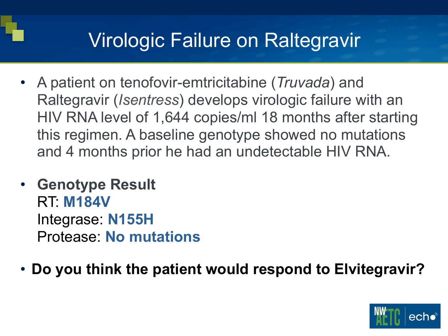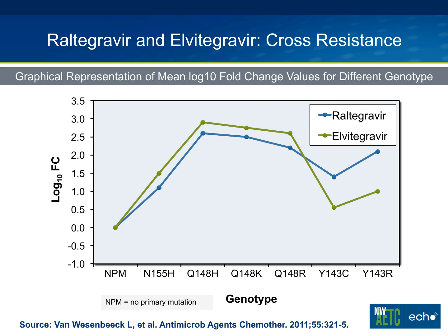Going back to this scenario: the individual had M184V and the most common raltegravir resistance mutation, N155H. The question now is, could we use elvitegravir, which is part of the new STRIBILD? The answer is very clear: no. Looking at this graphic of genotype mutations — no primary mutations (NPM), the N155H, Q148, and Y143 — and looking at the Y-axis showing fold change in resistance: with the N155H, raltegravir resistance in blue tracks very similarly with elvitegravir in green, if not slightly worse. Tracking across Q148, they also track together.